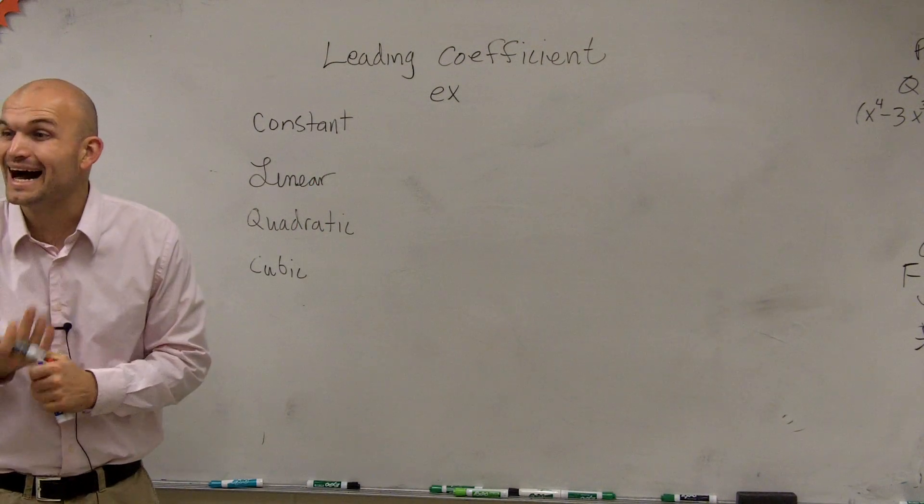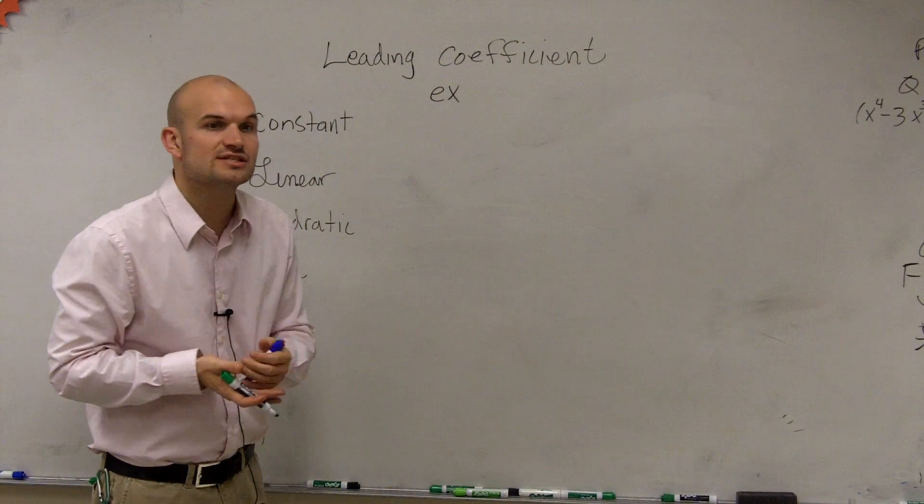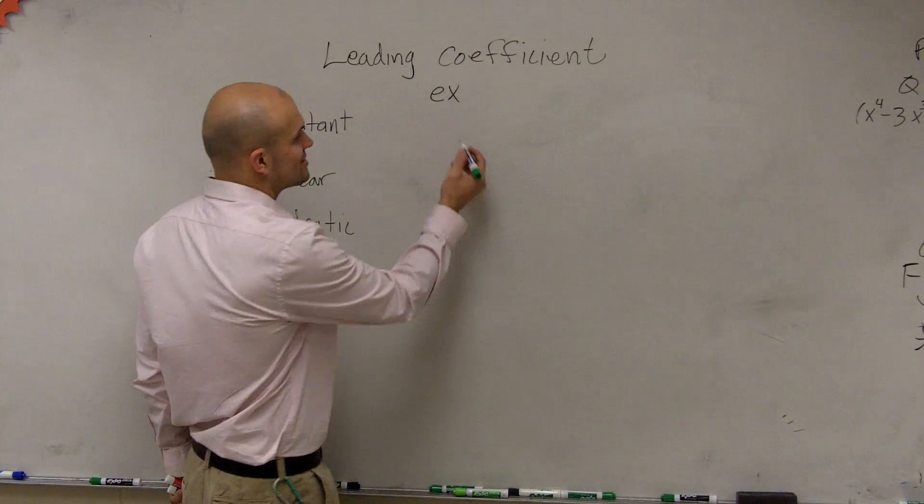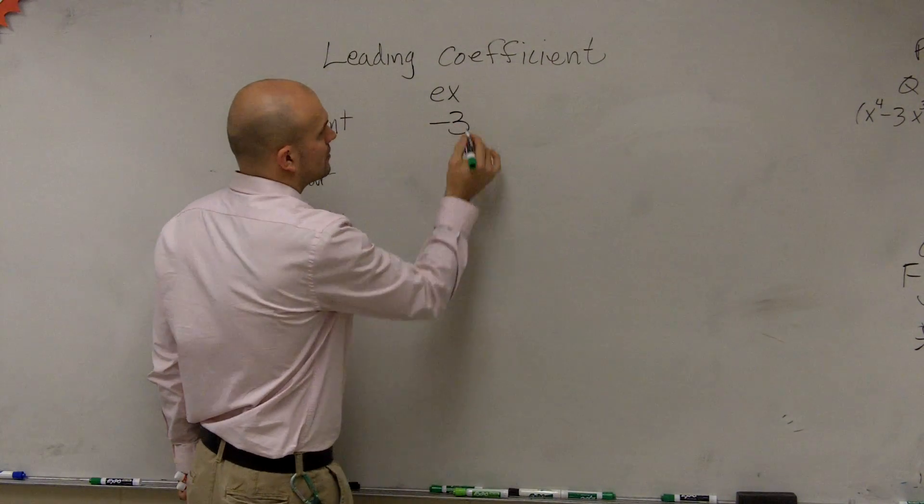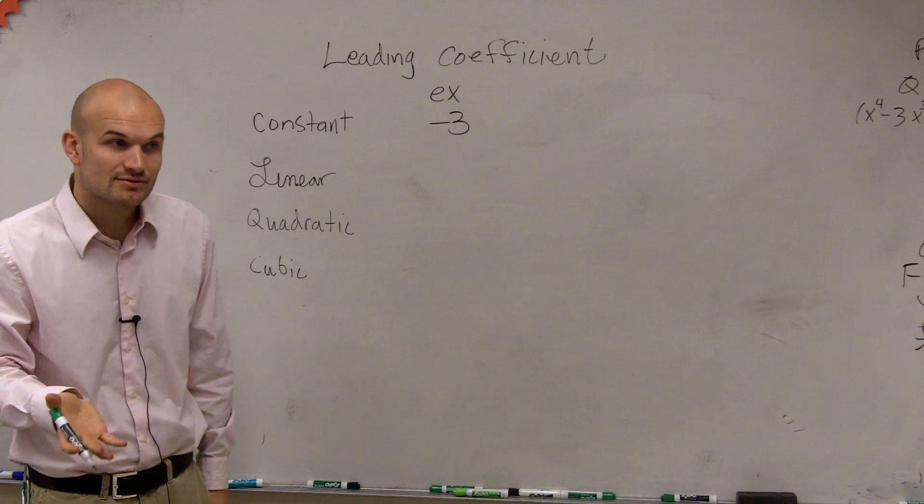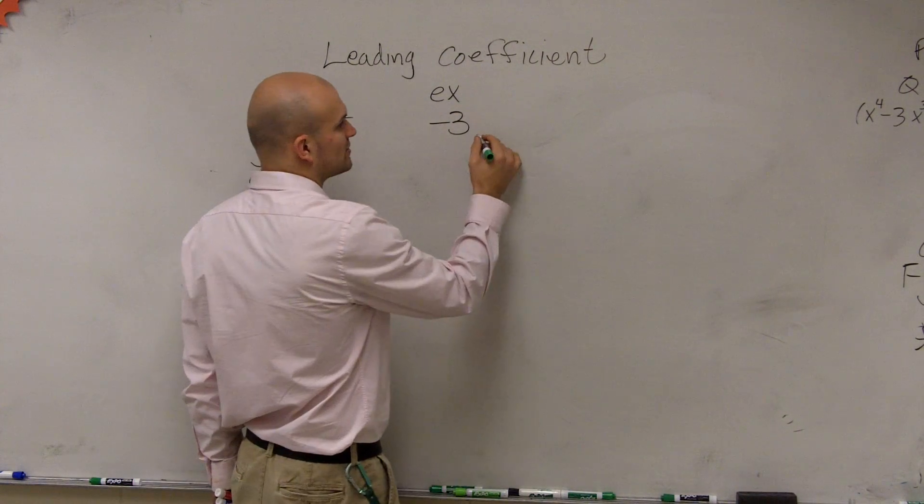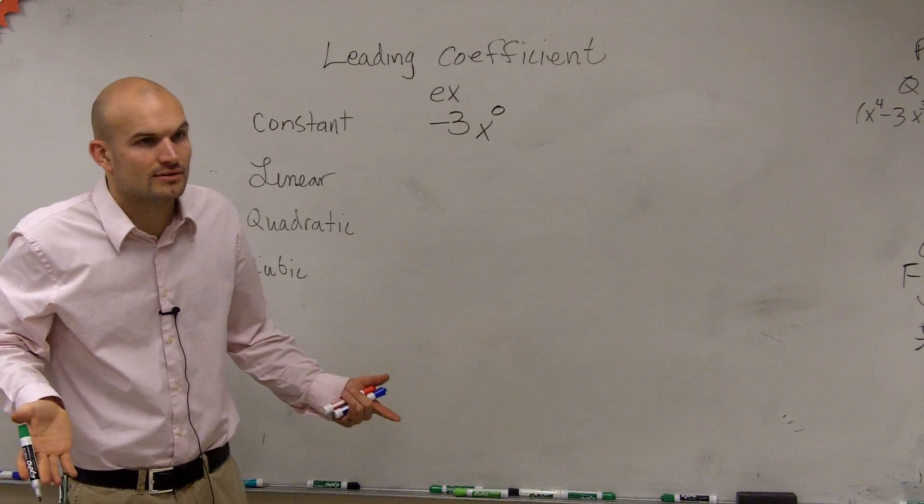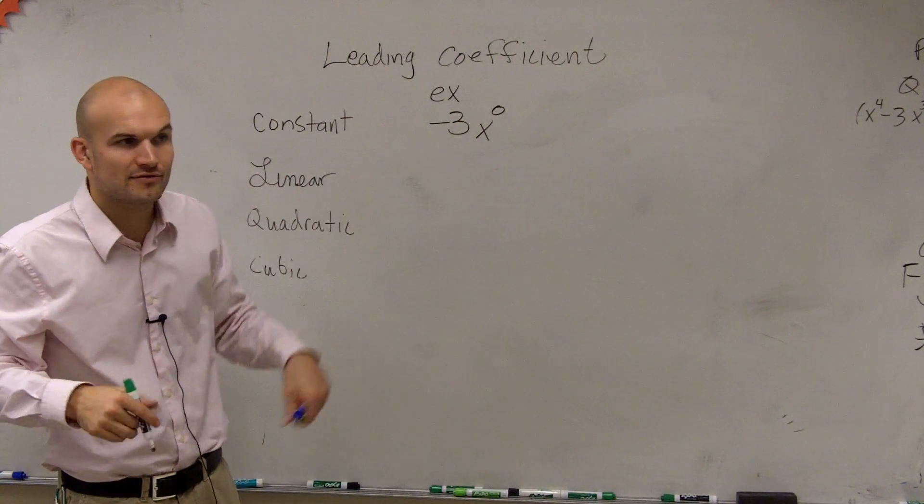So, let's go ahead and give an example of a constant function. A constant function is simply going to be a function that is not going to have a variable term in it. So, we could just say negative three. Now, you could, if you wanted to kind of get the variable term, you could say it could be x to the zero. Because x to the zero is really what? One. And one times negative three.